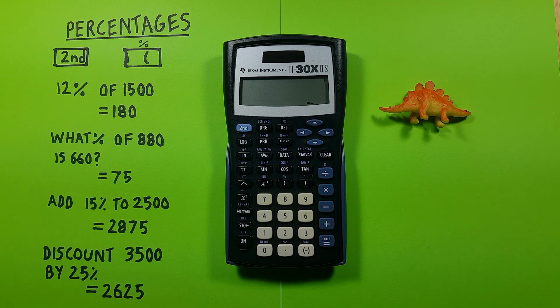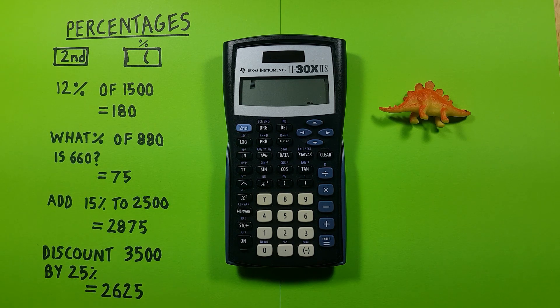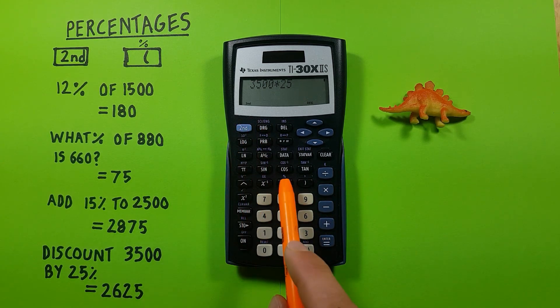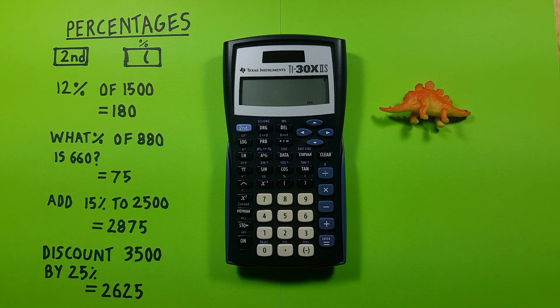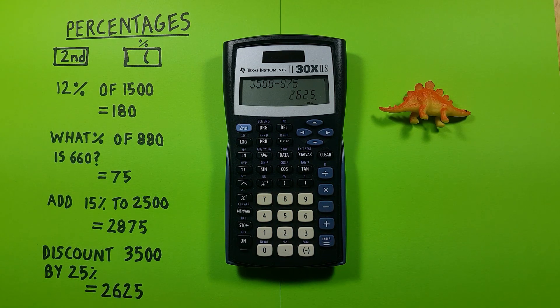We can also determine prices after discounts. Let's say we wanted to buy something that was $3500 but discounted by 25%. If we wanted to figure out how much that would be, we could enter 3500, then press times 25, second function bracket percent, and equals. We see that 25% of 3500 is 875. So we then go 3500 minus 875 equals, and we get our price after the discount of 2625.